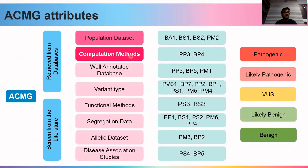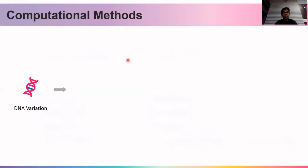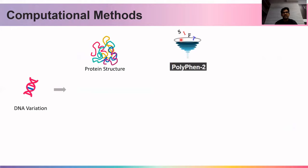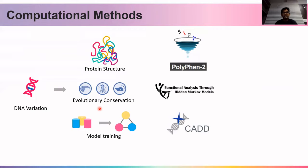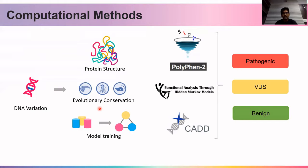For computational methods, multiple algorithms are used for variant interpretation. SIFT and PolyPhen predict variant pathogenicity based on protein structure and how much protein folding is affected. FATHMM uses evolutionary conservation and functionally important domains. CADD uses machine learning and multiple databases to classify variants as pathogenic, VUS, or benign.